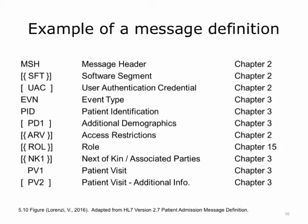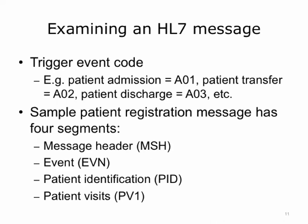If the segment can repeat, it is surrounded with curly braces. The message definition shown here is for a patient admission message. It requires the MSH, EVN, PID, and PV1 segments. All the other segments are optional. The SFT, ARV, ROL, and NK1 segments can repeat. For example, a patient admission can have zero to any number of next of kin or associated parties because the NK1 segment is optional and repeats.